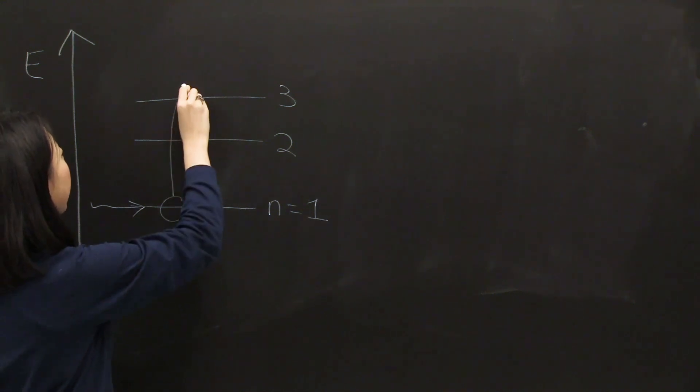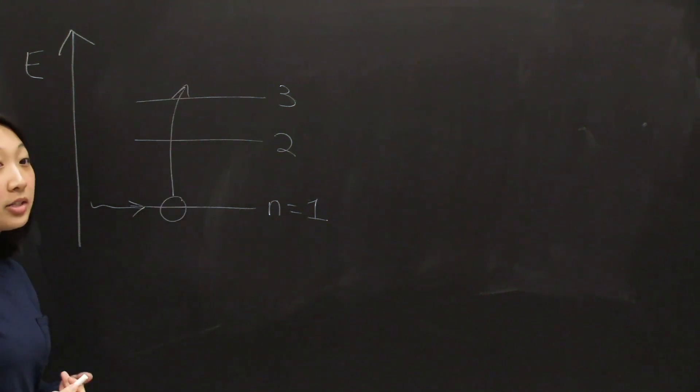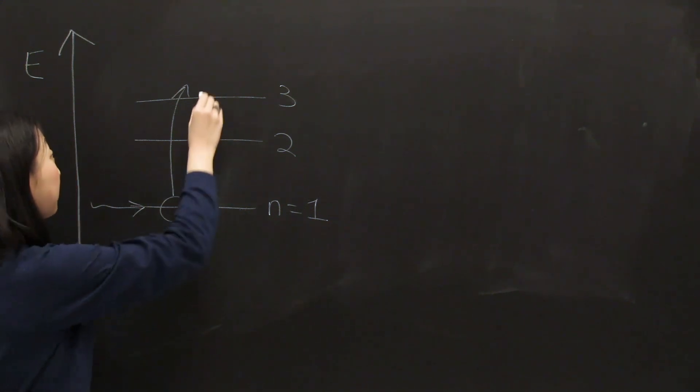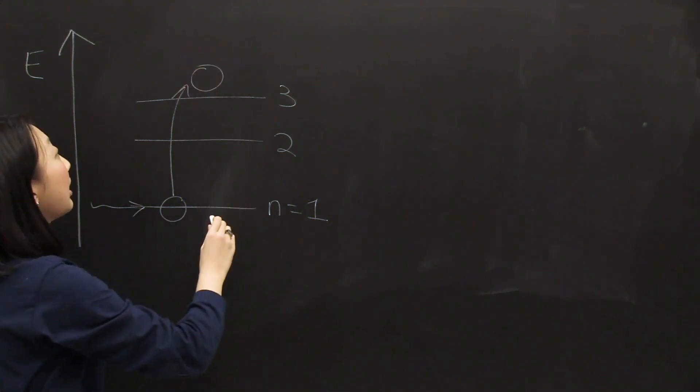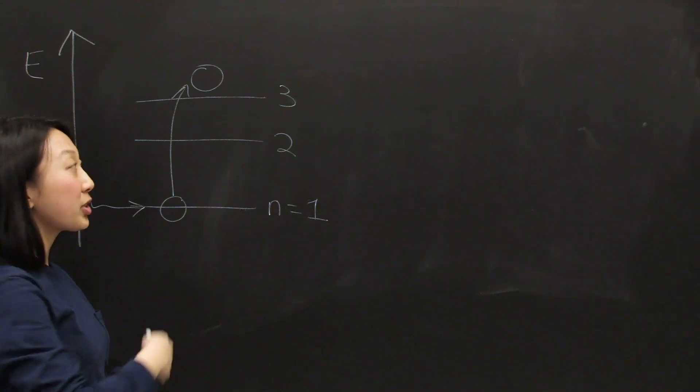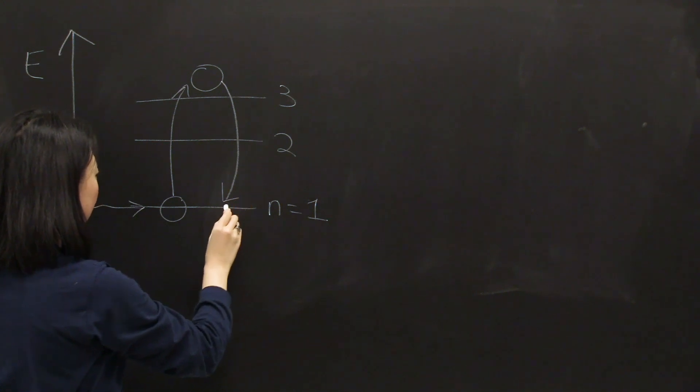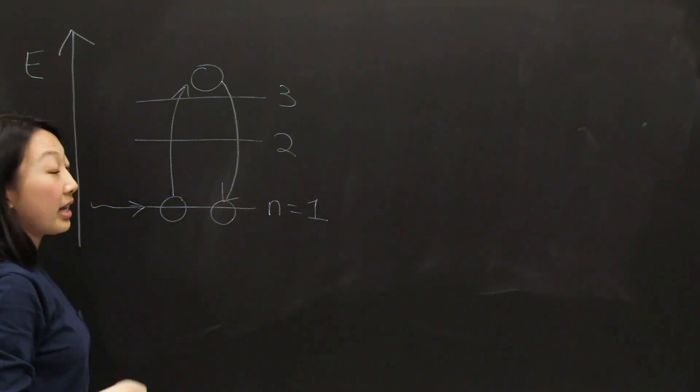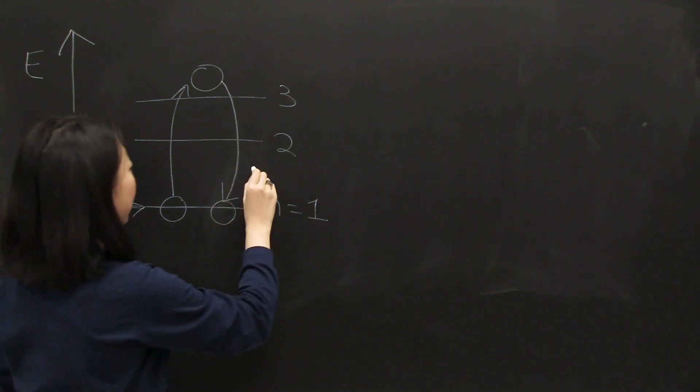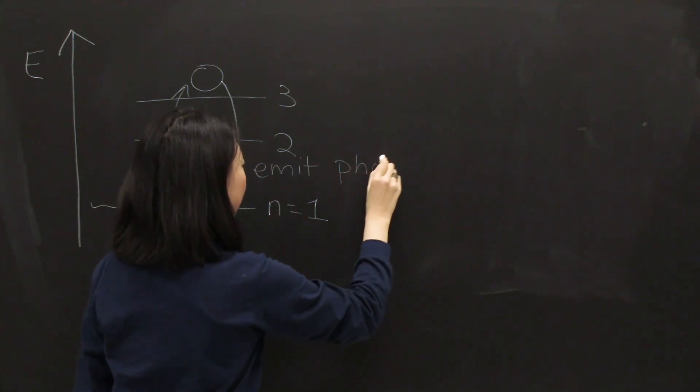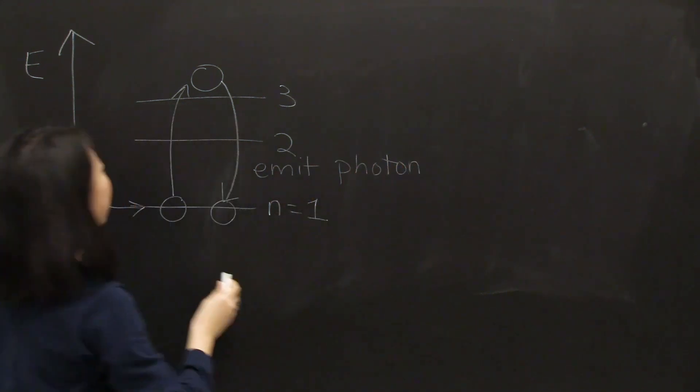So let's say that our electron starts in the ground state and it absorbs some energy and can hop to a higher energy level. But in doing so, at this higher energy level, it is in a more unstable state. Eventually it will want to return to that more stable state, and when it does so, it emits energy in the form of a photon. So emit photon and absorb energy.